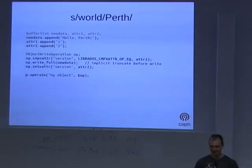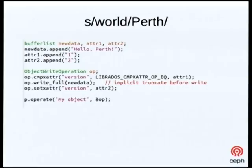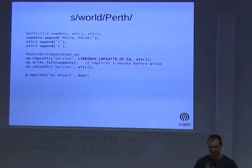Moving on from our hello world example — instead of saying 'world' we actually wanted to say 'Perth.' We prepare a transaction with the new data, the expected old attribute value, and the new attribute. The very first step asserts that the version attribute already on the object has a specific value — what we expect, the one we set before. Assuming that's true, the transaction continues, replaces the data with new content, and sets the version to version 2. When you submit this, the cluster does that validation; if true it applies the transaction to all replicas. You could have a similar transaction being sent from every other city in the country, and only one will succeed because only one will be first there and change from version 1 to version 2.